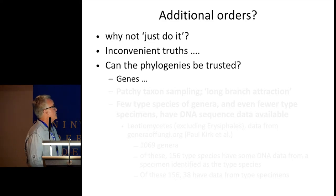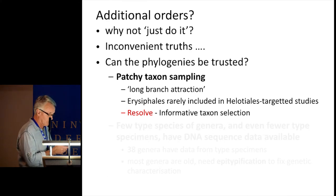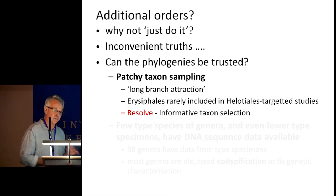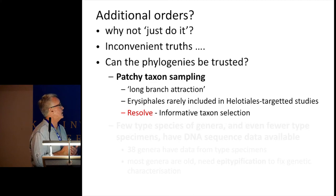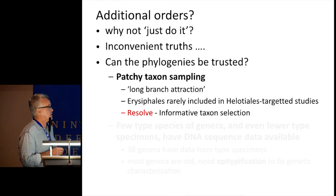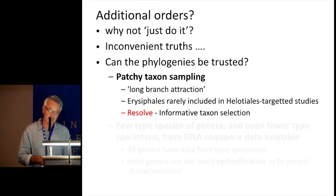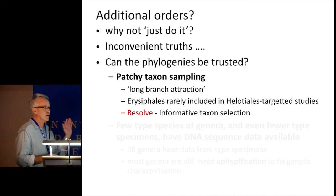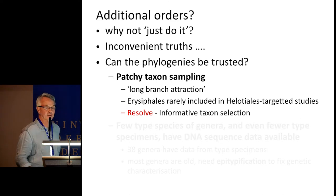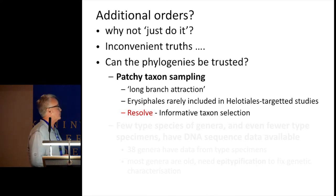Can the phylogenies be trusted? Probably not — both in terms of genes and patchy taxon sampling. There are issues of long branch attraction: things sit together on a tree just because nothing else anywhere vaguely close has sequenced data available, so they sit together as an artifact of taxon selection. The Erysiphales are very rarely included in Helotiales-targeted phylogenetic studies, but as I showed earlier, they sit right in the middle of the Helotiales. If they're not included in those phylogenetic analyses, the results are likely to be flawed. You resolve this by adding additional taxa, ideally through a systematic process that maximises the information those additional taxa provide.